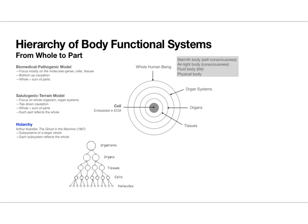Over the course of several videos, I've been exploring the different levels of organization in the human being. In the biomedical viewpoint, we usually use what we call bottom-up causation — we start at the level of molecules, genes, and cells, then build up to tissues, organs, organ systems, and the whole human being. Phenomena such as life activities, consciousness, and self-awareness are all thought to arise from the activities of molecules and genes.